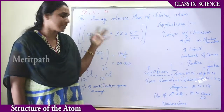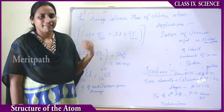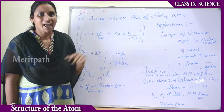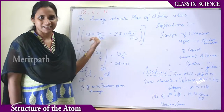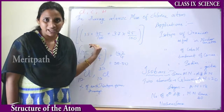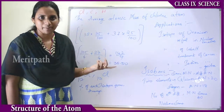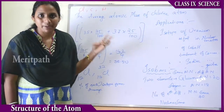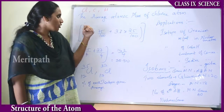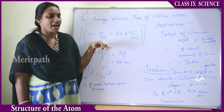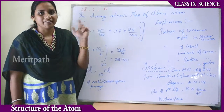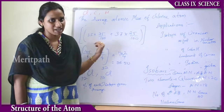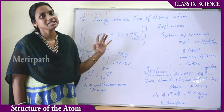Let us recall the summary of this chapter on the structure of an atom. We studied how the atom is divisible and what the subatomic particles are — proton, neutron, and electron. We studied different atomic models: J.J. Thomson's model, Rutherford's model, and Bohr's model, along with their drawbacks. We also studied atomic number, mass number, isobars, isotopes, and how to represent and calculate these for different elements, including the electron configurations of the first 18 elements and the concept of valency.